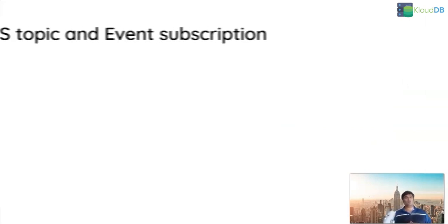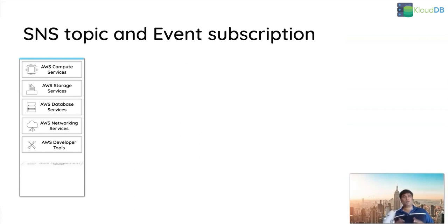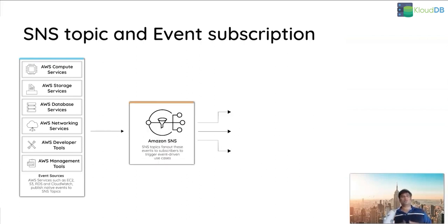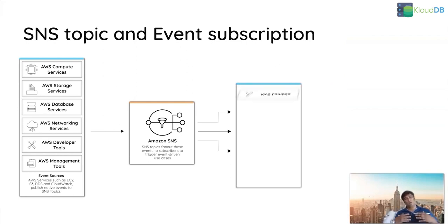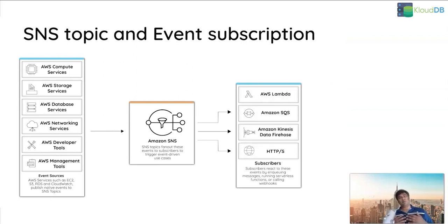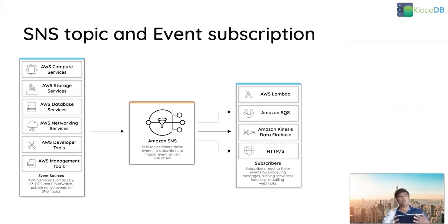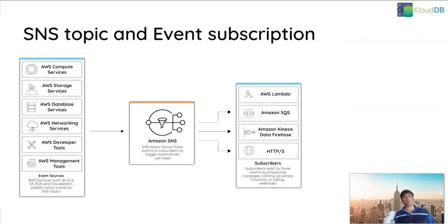To begin with, we need two things: we need to create an SNS topic and then we need to create one or more event subscriptions. The SNS topic can send messages to Lambda, SQS, or email/SMS. On the left side you can see the database services — in our case it will be RDS — and all the events that get generated will be sent to email if you pick email as the destination using the SNS topic.